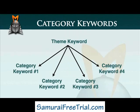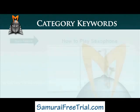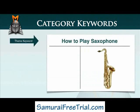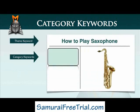An easy way to understand the difference between your theme keyword and your category keywords is to imagine that your theme keyword describes the overall theme of your website, while the category keywords describe the different categories of information contained within your website. For example, if I was to create a website targeting the how to play saxophone micro niche, my category keywords might include phrases like saxophone accessories or Selmer saxophones, which is a type of saxophone.